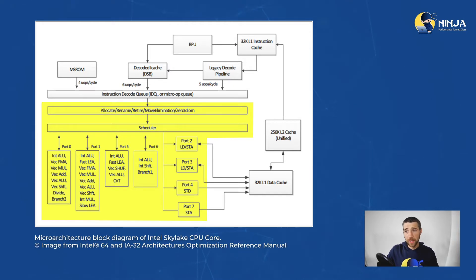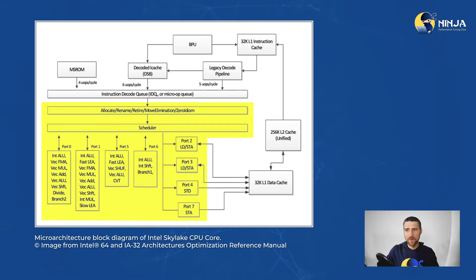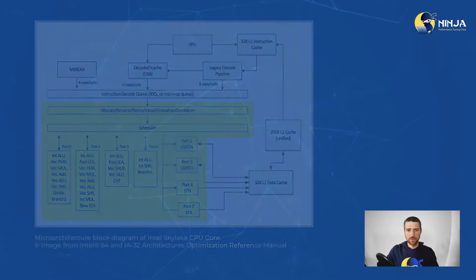the core-bound metric represents all the stalls that happen inside the execution engine that were not caused by memory issues. Remember that if we execute a load instruction and we miss in cache, this goes to the memory-bound category, not core-bound.